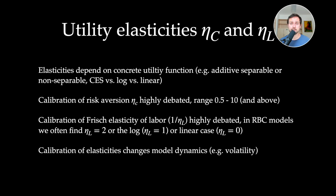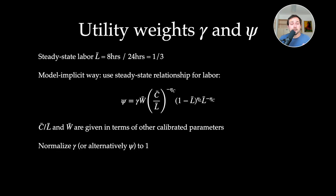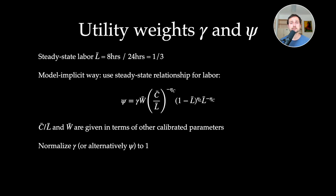These two values need to be calibrated carefully based on what you want to focus on in your analysis. For the utility weights gamma and psi, there is a model-implicit approach: by normalizing one weight to one, we can put everything on the right-hand side and calibrate the other accordingly. We target steady-state labor — assuming we work eight hours a day, one third is a good calibration. This implies a value for consumption over labor and we can then compute psi while normalizing gamma.